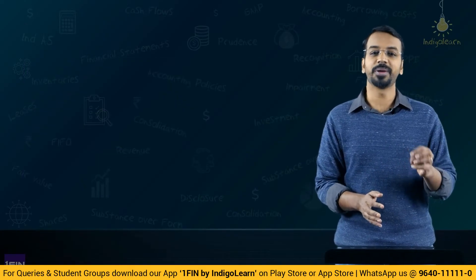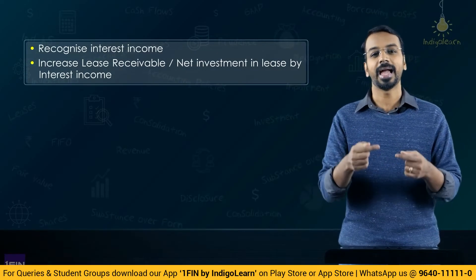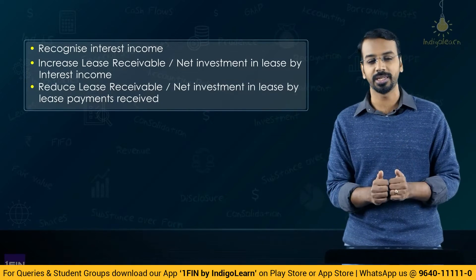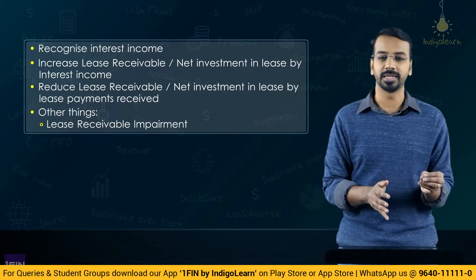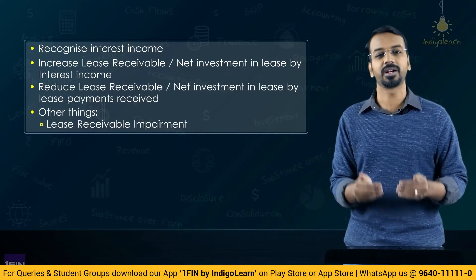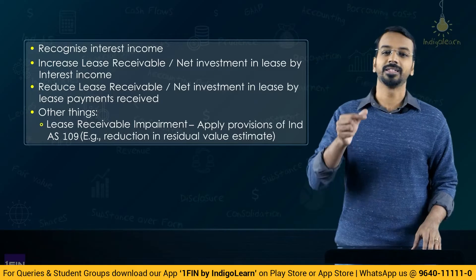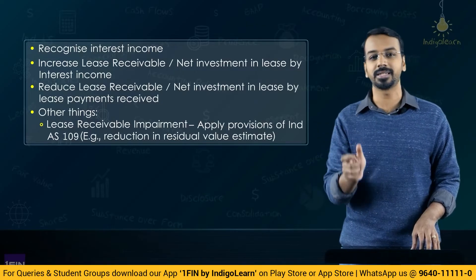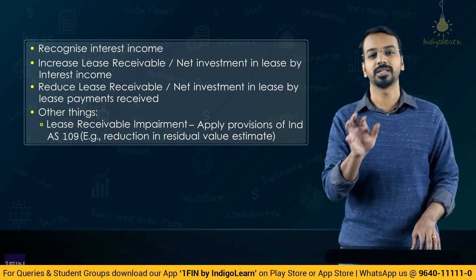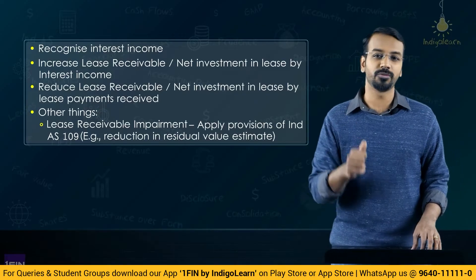Then we understood subsequent measurement in the books of the lessor. The lessor recognizes interest income, which is added to the net investment in lease, and payments received from the lessee are reduced from the net investment in lease. Impairment testing is also carried out on the net investment in lease. Because these are financial assets, you apply the principles under IFRS 9 for testing impairment. When the residual value changes, the value of net investment in lease changes and the difference is recognized in P&L. This re-measurement is done at the original rate of interest — you do not revise the discount rate.